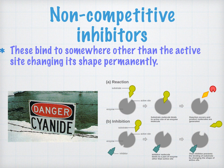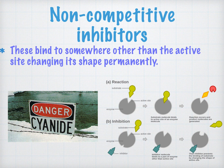By binding elsewhere on the enzyme, the non-competitive inhibitor disrupts the overall tertiary structure of the enzyme. This changes the shape of the active site so that it is no longer complementary to the substrate molecule. An important example of this is cyanide, which inhibits the cytochrome oxidase enzyme used in aerobic respiration.